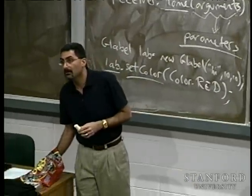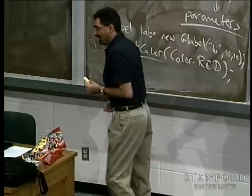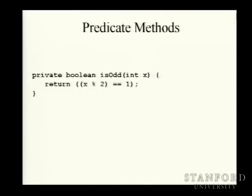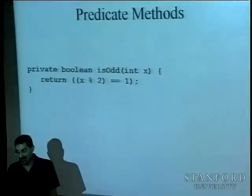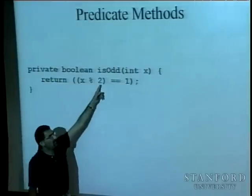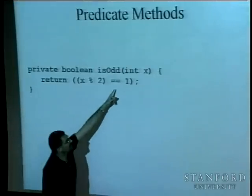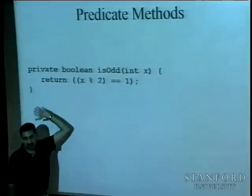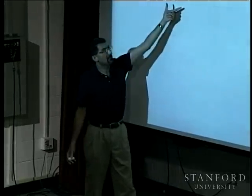Here's a predicate method — our computer-science term for a method that returns a Boolean. `private boolean isOdd(int n)` returns true if n is odd. It computes `n % 2 == 1`: if the remainder when dividing by 2 equals 1, that's true (odd); if it equals 0, that's false (even). We return that Boolean expression directly — no if statement needed.